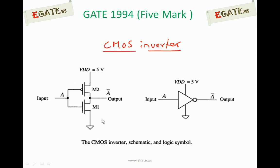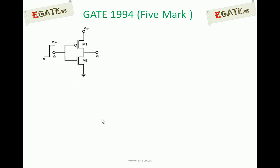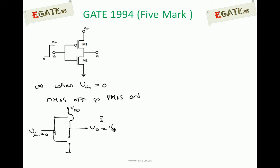Let us assume we apply V_input equal to 0, that is a logic low. By that time, NMOS will be in the off condition and PMOS will be in the on condition. In the equivalent model when V_input equals 0: NMOS acts as an open circuit, PMOS acts as a short circuit. So the output node V0 connects to VDD through PMOS, giving output equal to VDD.